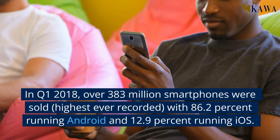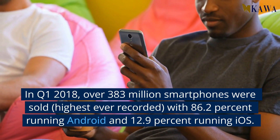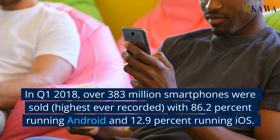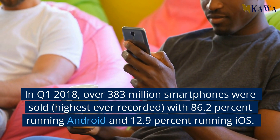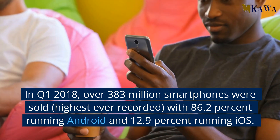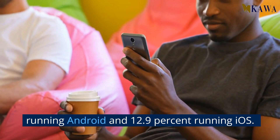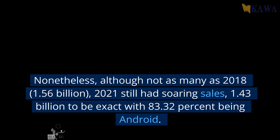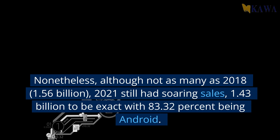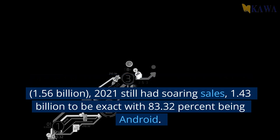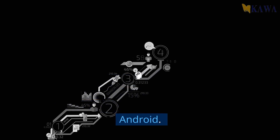In Q1 2018, over 383 million smartphones were sold — the highest ever recorded — with 86.2% running Android and 12.9% running iOS. Nonetheless, although not as many as 2018, 2021 still had soaring sales: 1.43 billion to be exact, with 83.32% being Android.